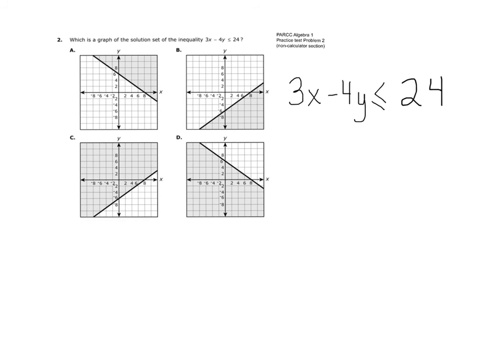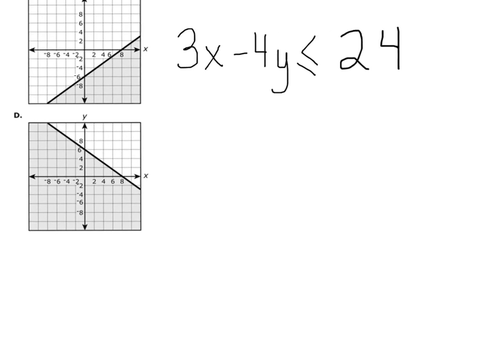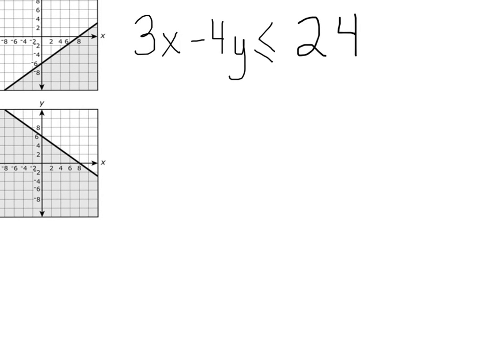So let's focus in on the equation and let's attempt to get y by itself. So what's the first thing I would do to get y by itself? I would subtract 3x from both sides like this. And so I have negative 4y. Right, this cancels, but I still have all of this right here. Negative 4y is less than or equal to negative 3x plus 24.